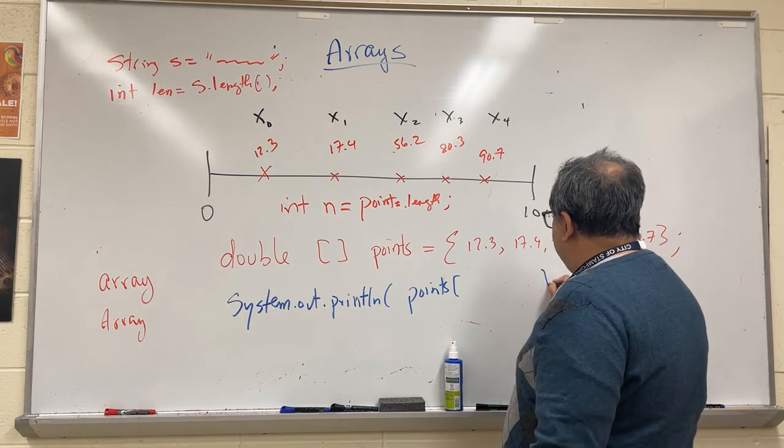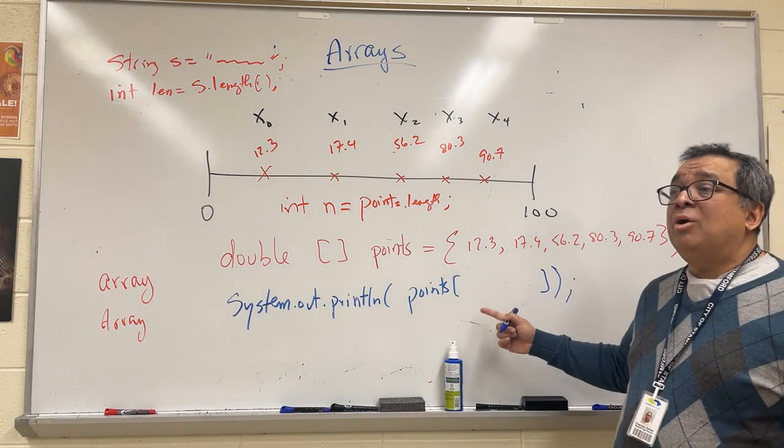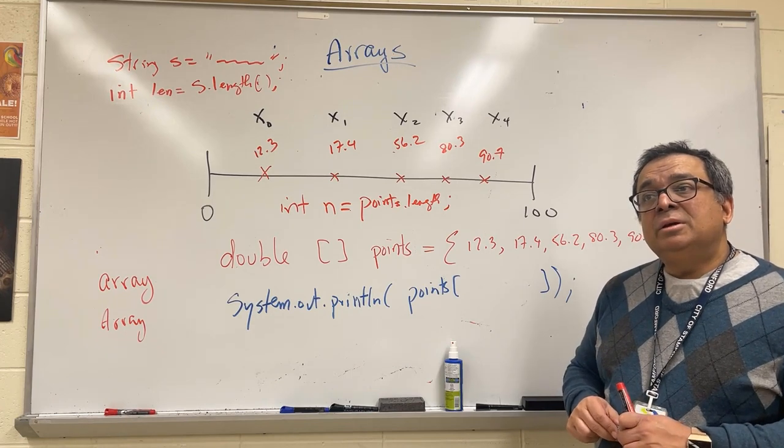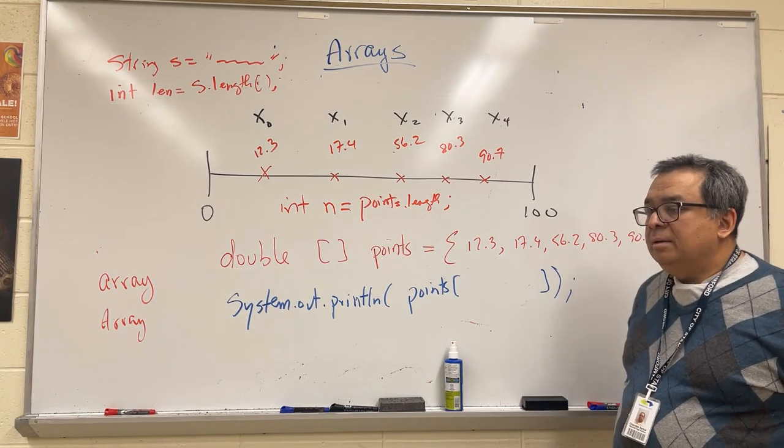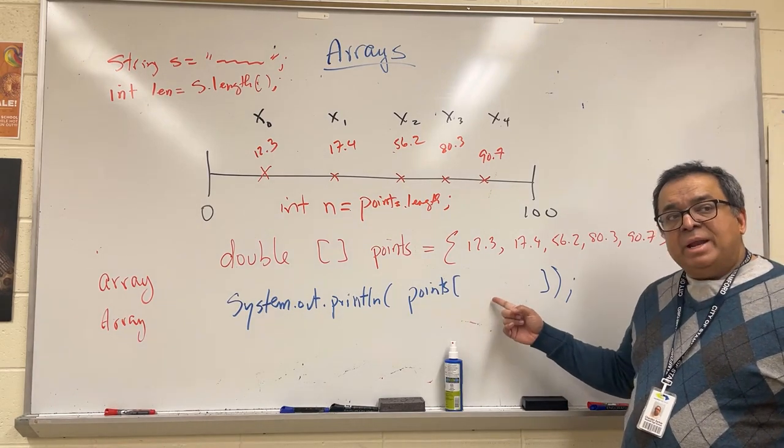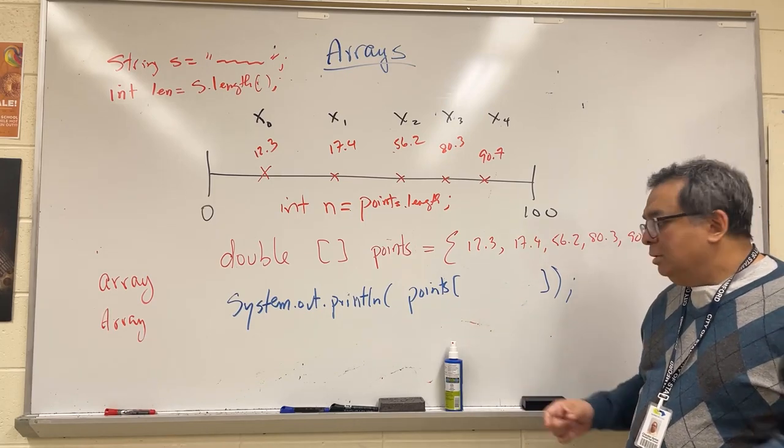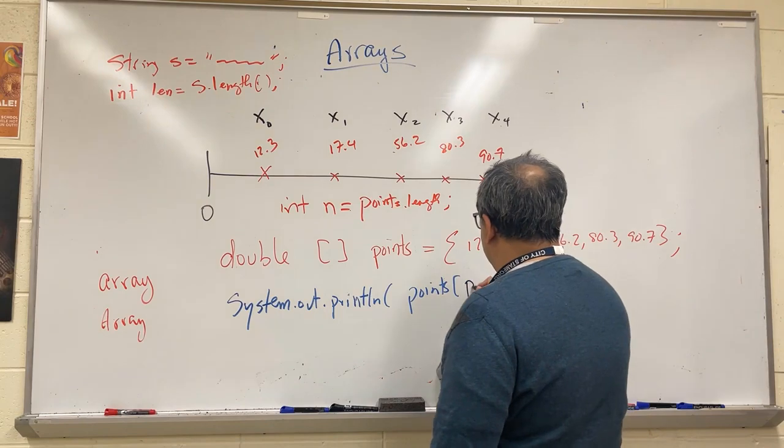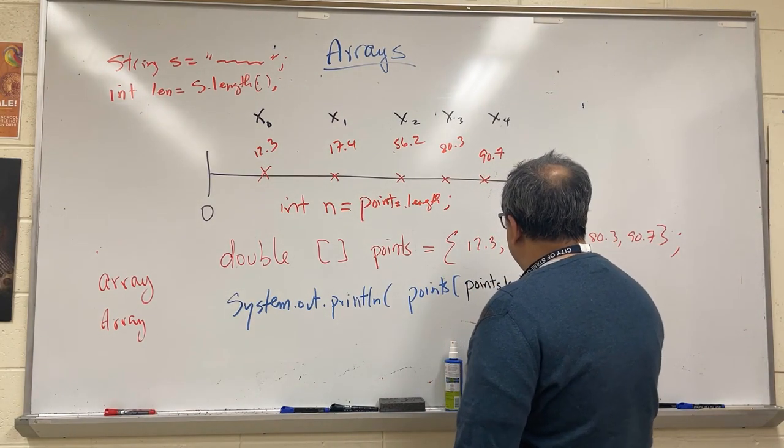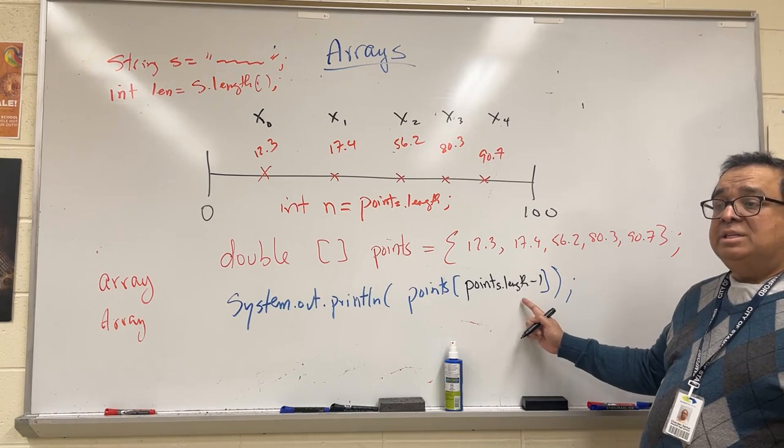Now I want you to turn to your partner one more time and ask them what would be a more abstract expression to put over here that would allow me to always print the last element of the array if I didn't know how big the array was. I would put here points.length minus one. If the array has five elements in it, the last valid index is four.